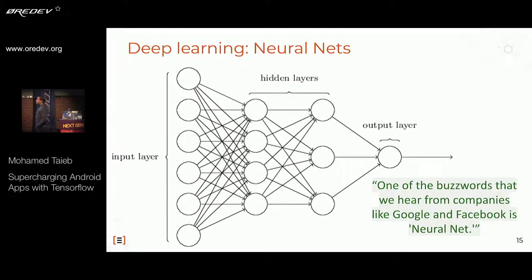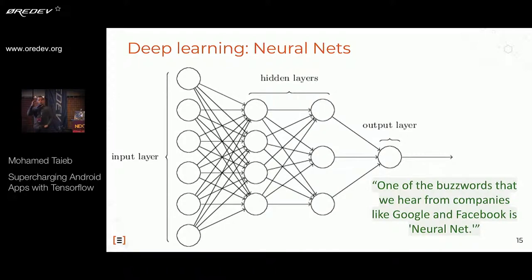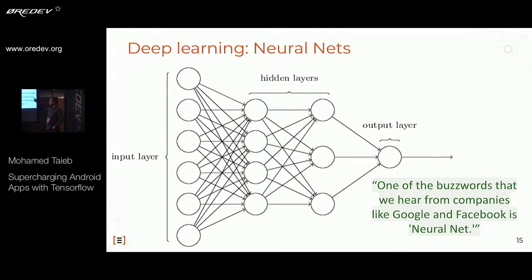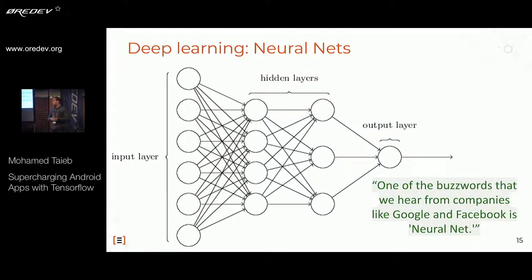One of the buzzwords we hear today from big companies like Facebook and Google is neural nets, or deep learning. It's a kind of reinforcement machine learning modeled on the way neurons work in the human brain. A neural net is composed of many layers, each composed of many nodes — also called neurons — connected by edges to propagate signals or data from one layer to another using activation functions, which are the results of mathematical operations like matrix multiplication or addition.